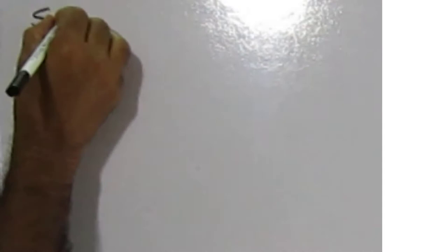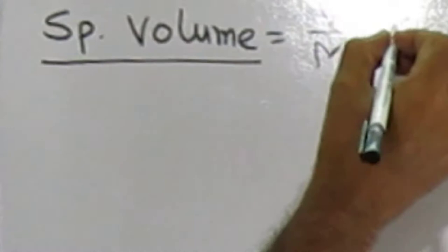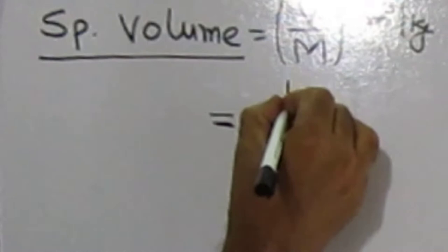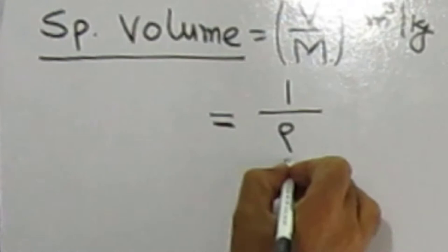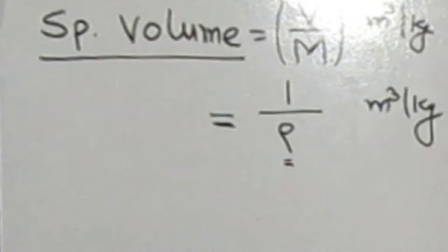Next property is specific volume. Specific volume of a fluid is defined as the volume of fluid occupied by a unit mass, or volume per unit mass of fluid. Specific volume equals volume of fluid divided by mass of fluid, or 1/rho. The specific volume is the reciprocal of mass density, and its unit is meter cube per kg.